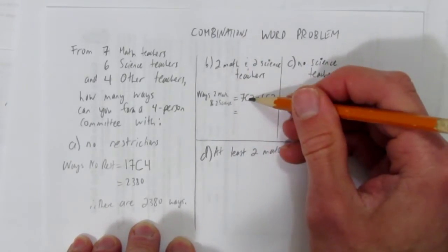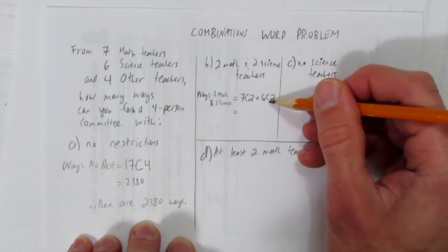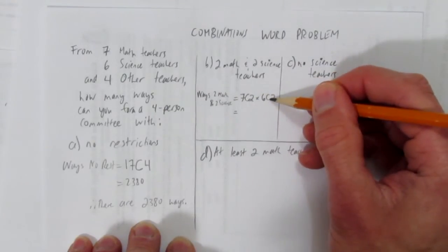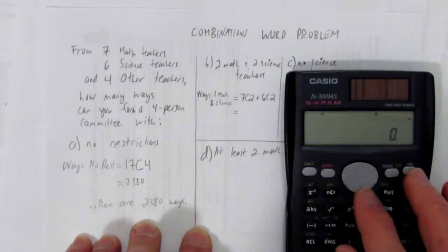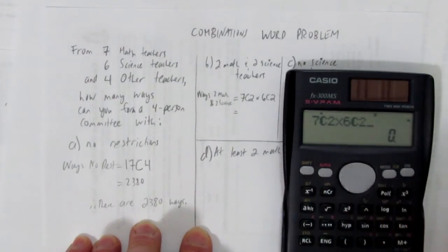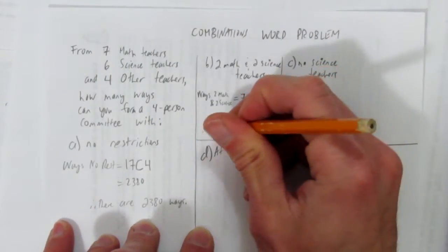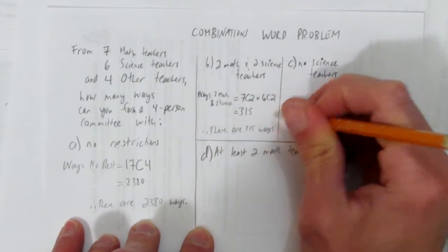You choose math teacher one and math teacher two, then you have to take into account that for that choice, there are all these possibilities of science teachers. In other words, it's multiplying, because for each of these cases, you have all these cases again. Now let's calculate it. What's seven choose two, times six choose two, and you get 315. Therefore, there are 315 ways using this restriction.